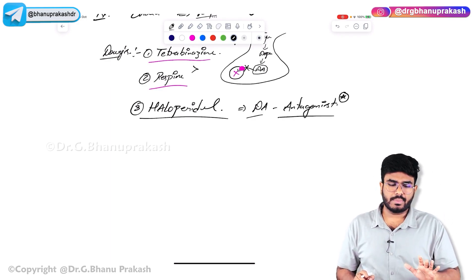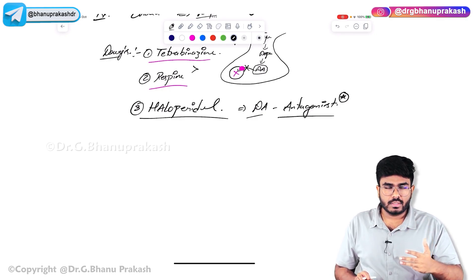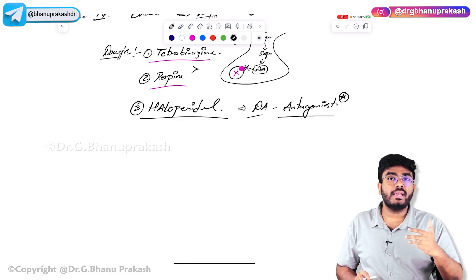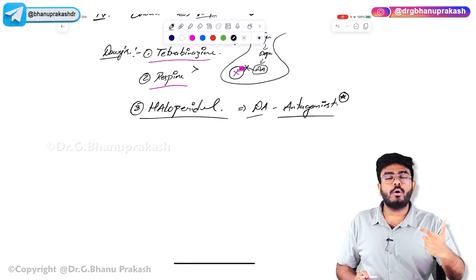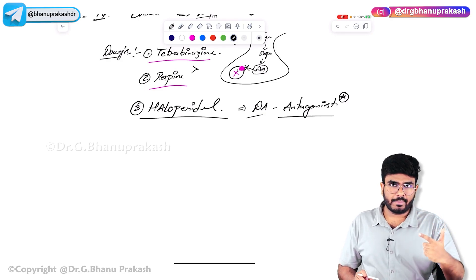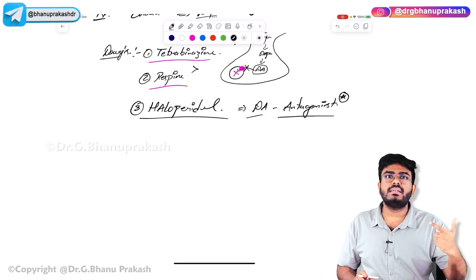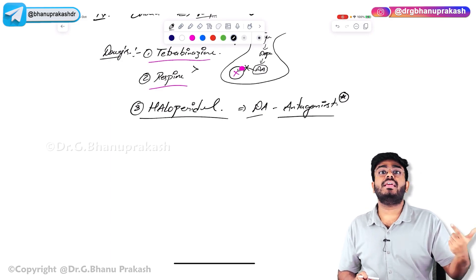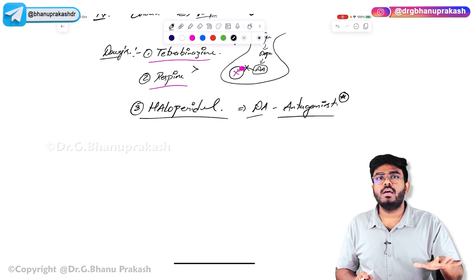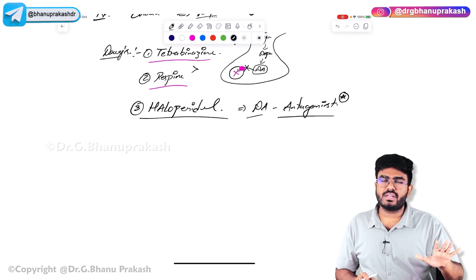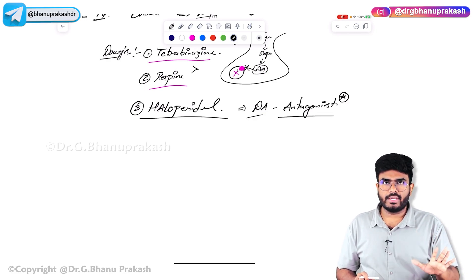To summarize Huntington's: the patient will have aggression, depression, and chorea — all due to CAG repeats. It is an autosomal dominant condition with striatal damage. GABAergic neurons are dead because of glutamate excitotoxicity. Decrease dopamine to treat the chorea using drugs like Tetrabenazine and Reserpine.